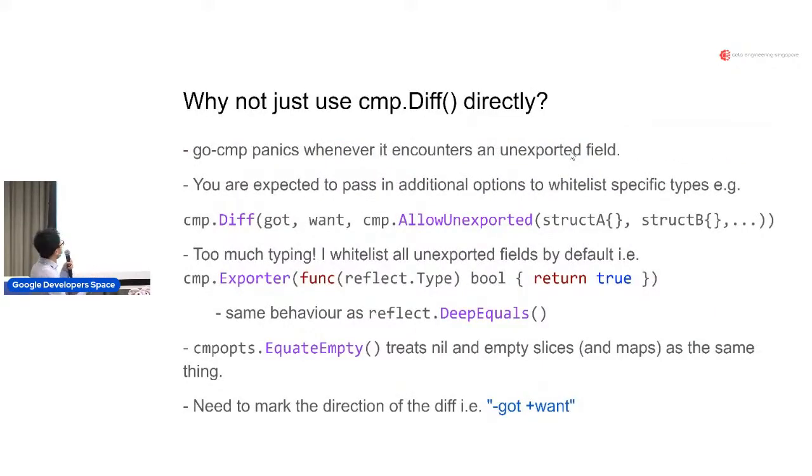So why not just use cmp.Diff directly? This is where I feel like the authors of cmp.Diff made it a little bit hard to use directly, because it panics whenever you have an unexported field. If you're writing any kind of library package, you will most likely have unexported fields in your type because you don't want to export everything. You're expected to do this thing where you call cmp.AllowUnexported and then pass in the list of everything that you want to allow the unexported fields in. It's going to be really complicated if you have nested types within your types, and you have to remember to pass in everything, otherwise it's going to panic somewhere down the line.